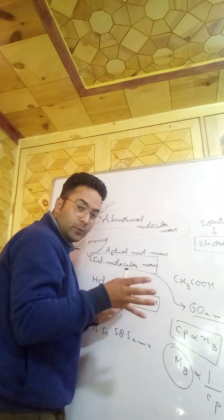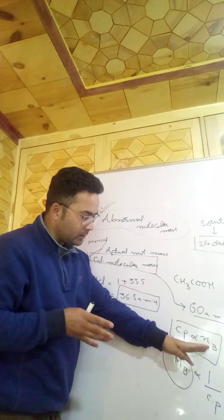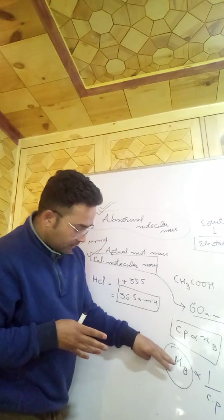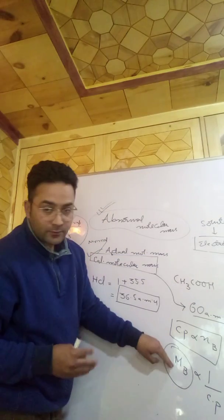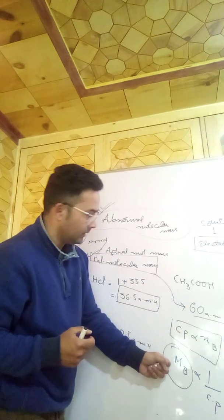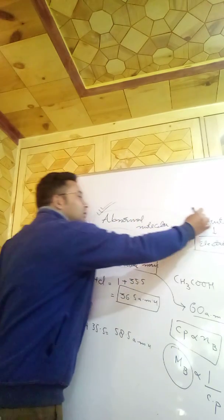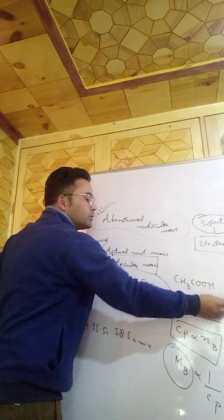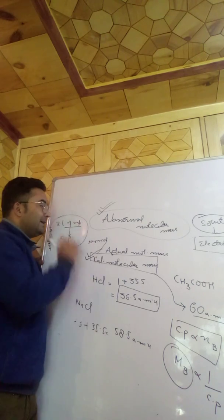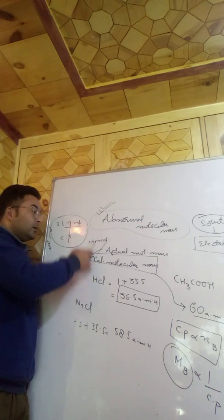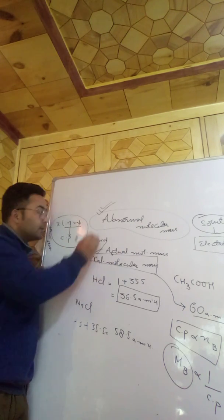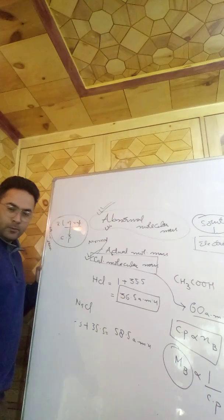Likewise, if association occurs — for example, acetic acid associates to form a dimer — the number of solute particles in solution decreases. The colligative property value decreases, which causes the molecular mass to increase. Due to association or dissociation, the molecular mass determined via colligative properties does not match the calculated molecular mass. That is why it is called abnormal molecular mass.